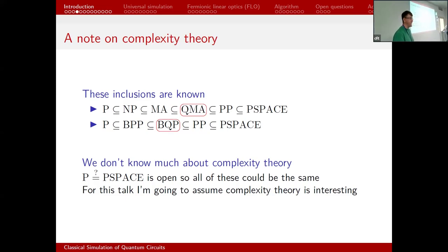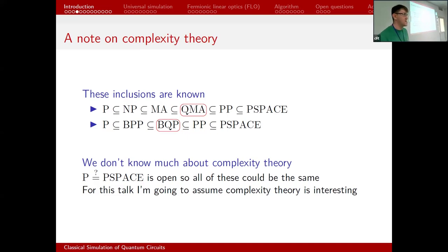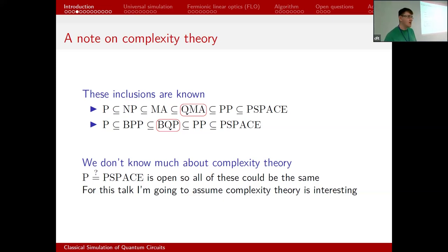PSPACE is the computations you can do on a deterministic machine in polynomial space — maybe it takes exponential time, but your space is polynomial. It's a very big complexity class. It could potentially be the same as P; we don't know. For now, I'm going to pretend these inclusions are strict and that it's actually meaningful to talk about quantum computational power as being different from classical computational power.